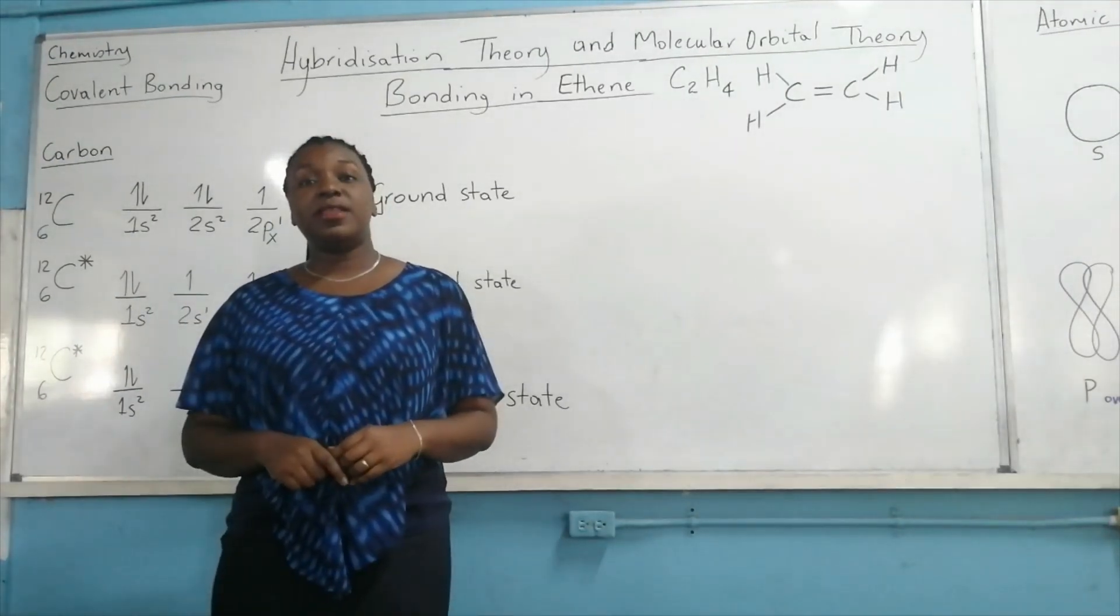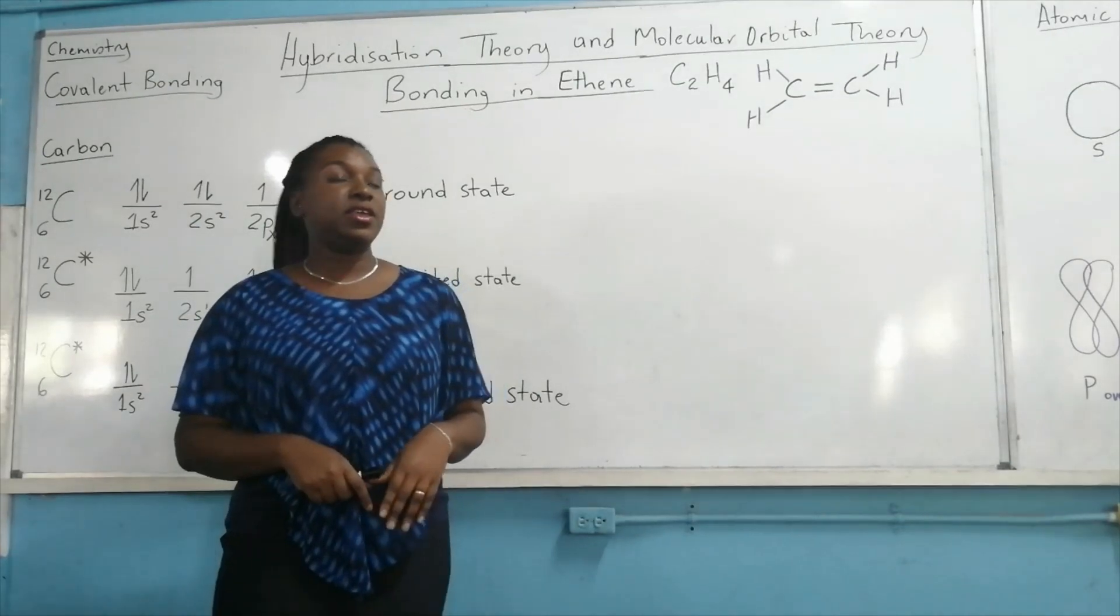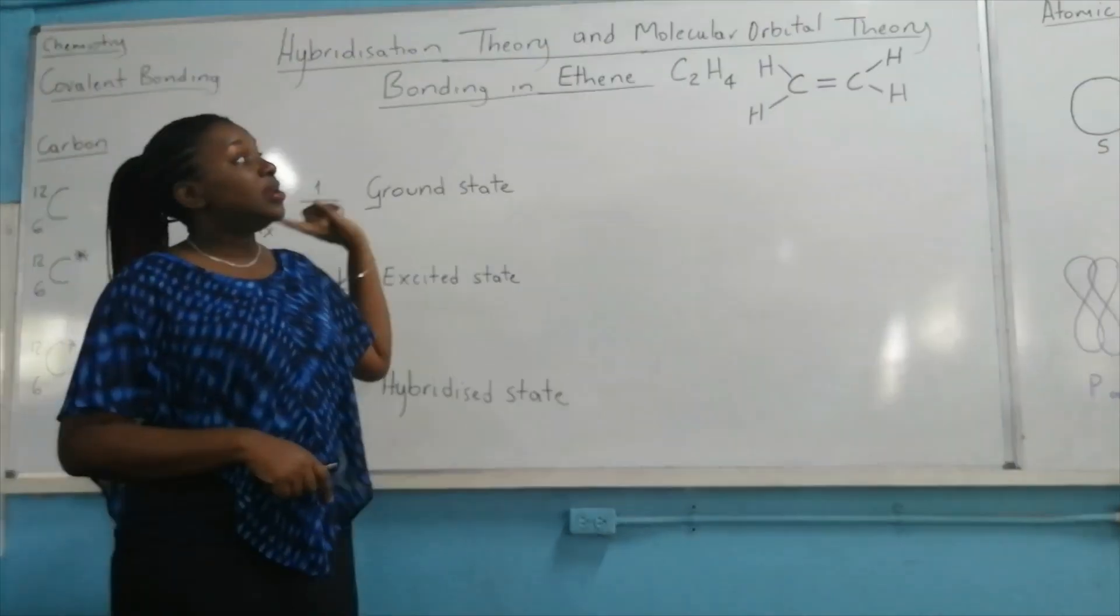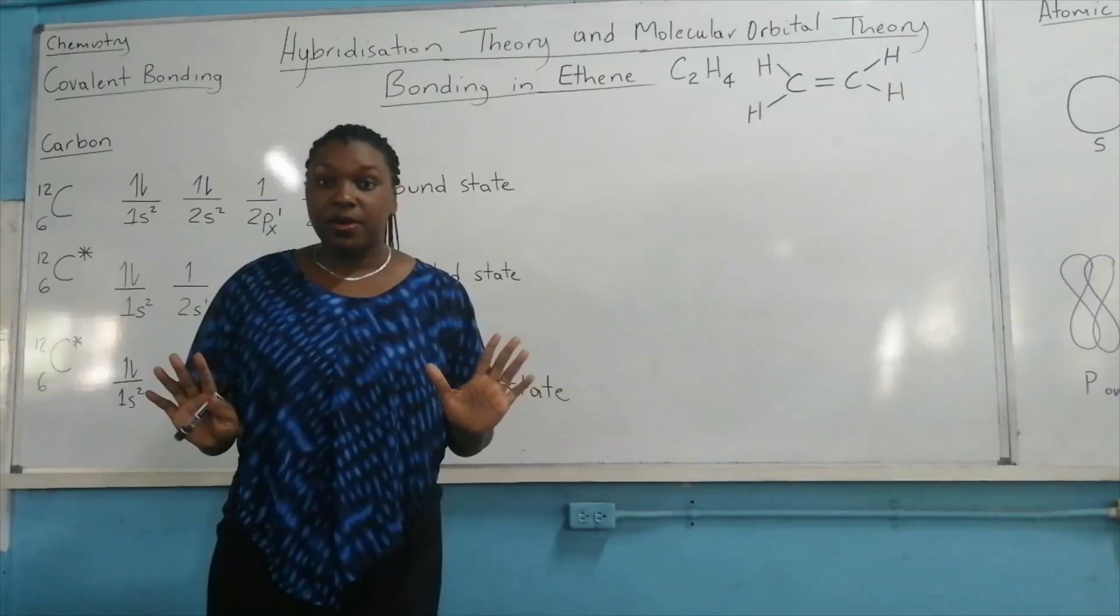Today we're going to look at the covalent bonding in ethene and explain it using the hybridization theory and the molecular orbital theory. Let us begin our lesson.